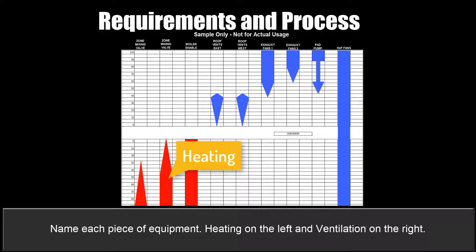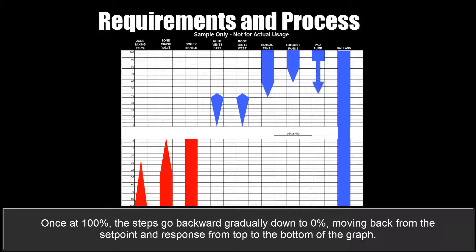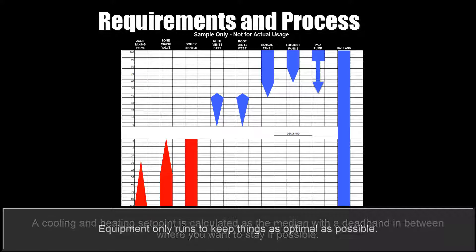It starts with heating on the lower left and ends with ventilation on the top right. As equipment is energized, the sequence of operations is read from bottom to top with the percentage requirements from 0 to 100%. Once at 100%, the steps go backward gradually down to zero, moving back from the set point, and the response moves from the top to the bottom of the graph. A cooling and heating set point is calculated as the median with a dead band in between where you want to stay as much as possible. Equipment only runs to keep things as optimal as possible.